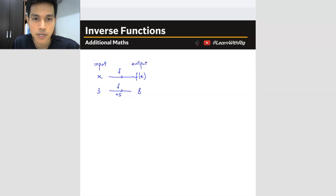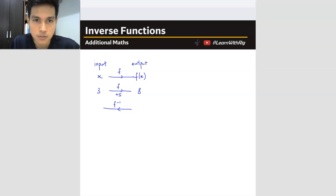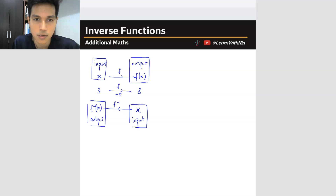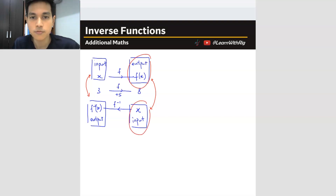But if I change it to the opposite direction — from 8 to 3 — now this is called an inverse function. That means you're going the opposite direction. So there's a difference: for the forward function, the input is x and the output is f(x). But because it is inverse, x now becomes the output. The input for the inverse function is the same as the output of the forward function, and the output for the inverse function becomes the input of the forward function.